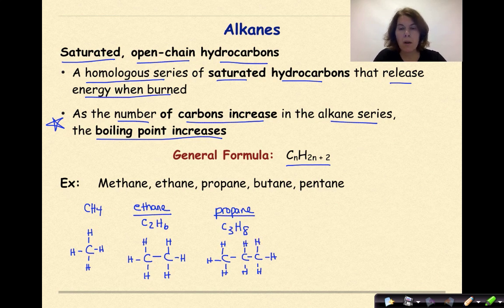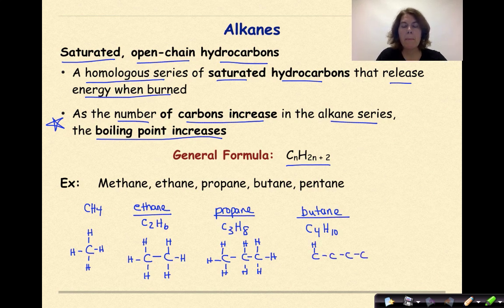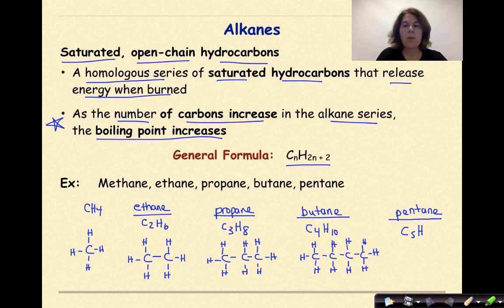Now let's do butane. 'But' means four, so we have C4H10 — that's 2×4+2. We're going to have four carbons surrounded by 10 hydrogens. And finally, pentane: 'pent' means five, so C5H12 — 2×5+2. We draw five carbons all with single bonds connecting them, then surround them with 12 hydrogens.